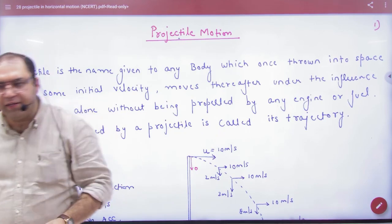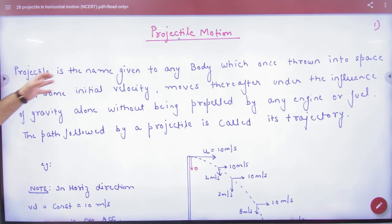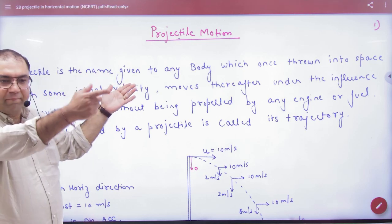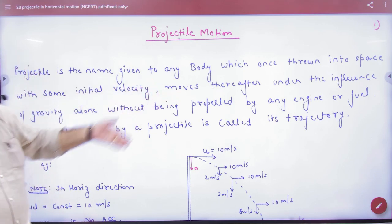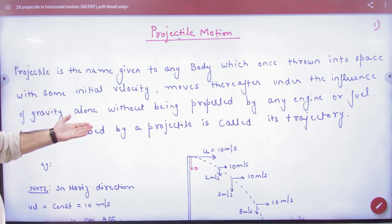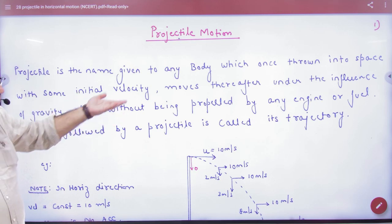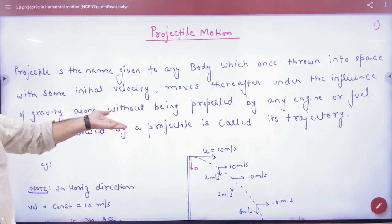But let's read the definition. Projectile is the name given to any body which when thrown into space with some initial velocity, moves thereafter under the influence of gravity alone, without being propelled by any engine or fuel. This is known as a projectile.